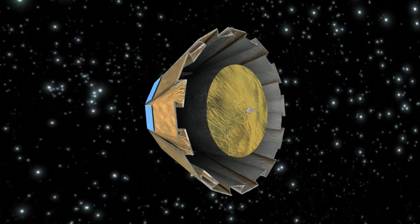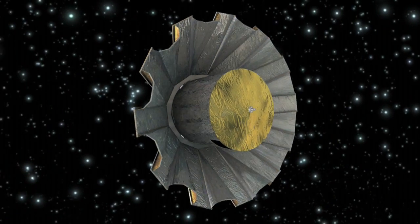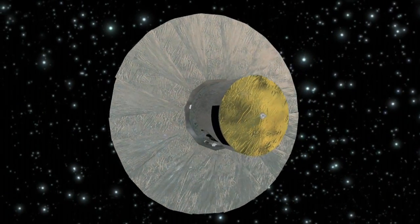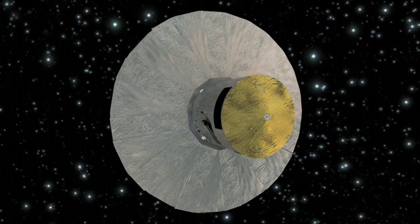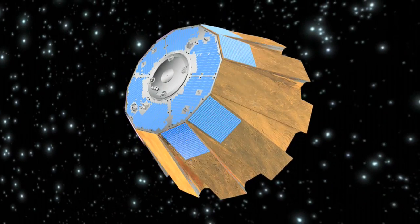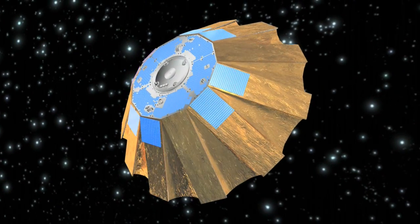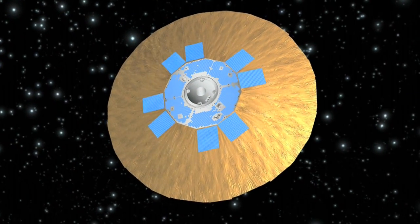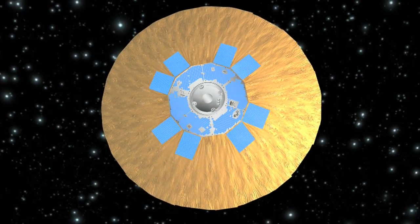To achieve the precise and accurate measurements that will be needed, the Gaia payload must remain mechanically and thermally ultra-stable. This is achieved by using a special ceramic material to construct the payload and by shielding the payload with a large sunshield that will be unfolded after launch.